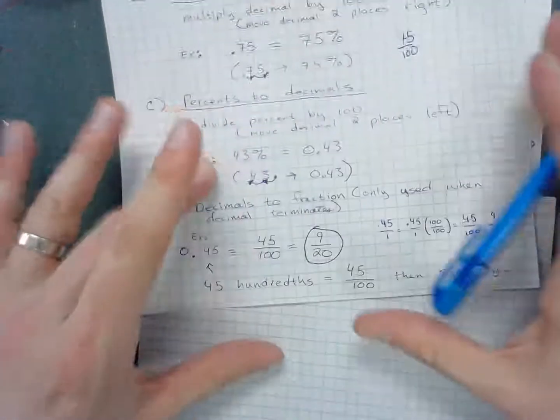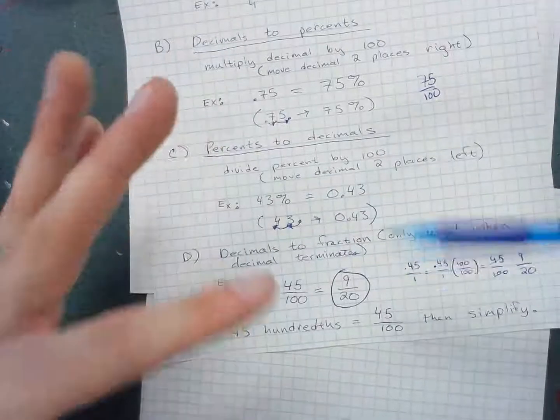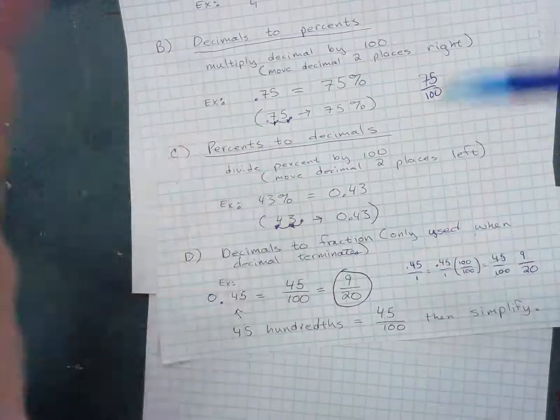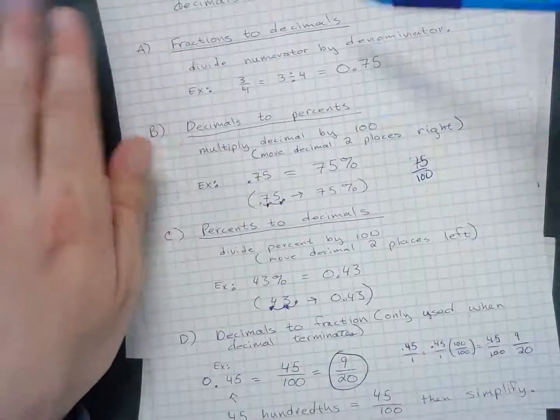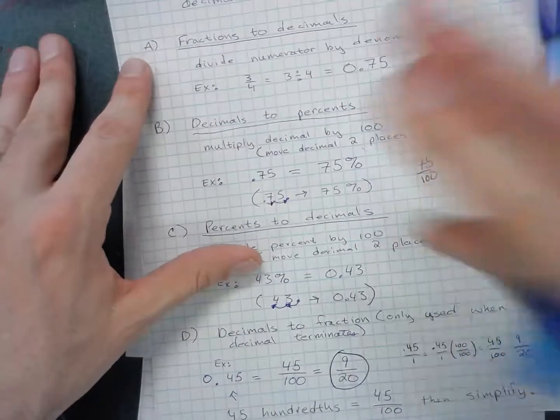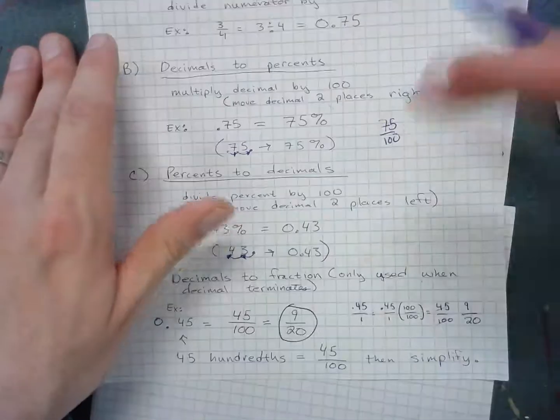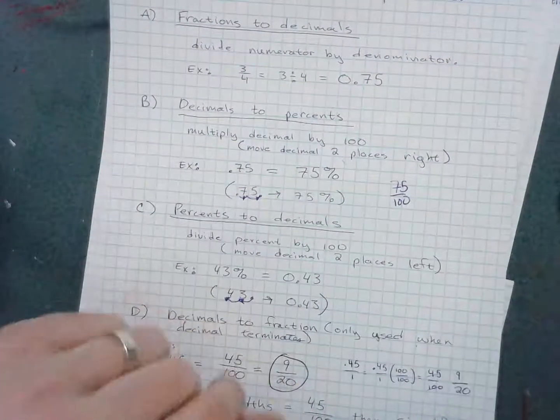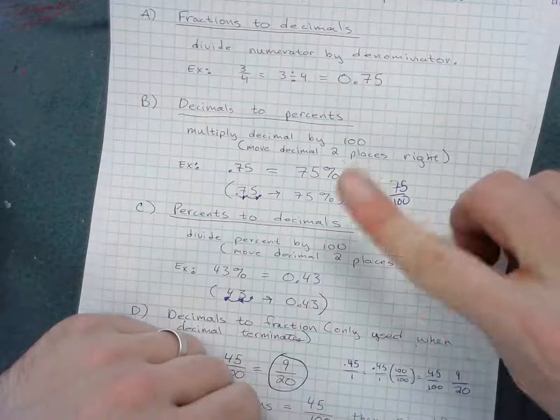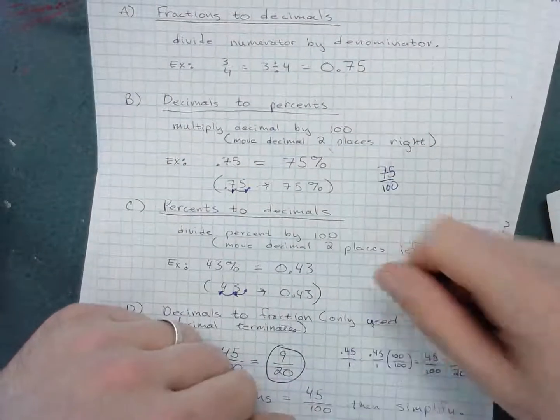If you want to go from a fraction to a percent or vice versa, take one quick stop at the decimal as an intermediate. It's not difficult to convert between decimals and percents, but it becomes a bit more complicated with fractions.